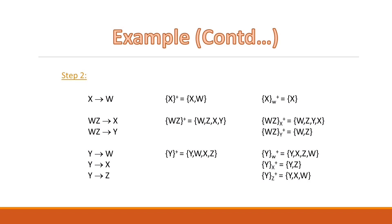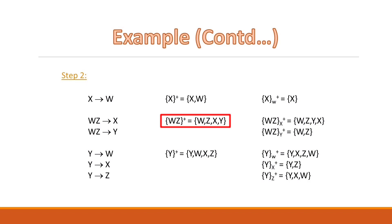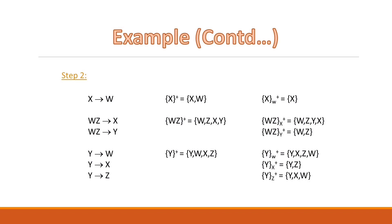Now for the functional dependency WZ to X: when we include it, the closure of WZ contains W, Z, X, and Y. If we remove this FD, the closure of WZ still contains W, Z, Y, and X — it remains unchanged. So WZ to X is non-essential.